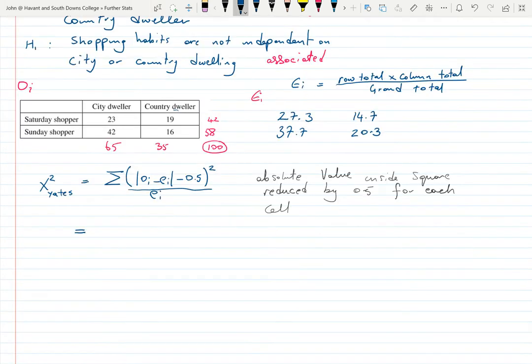Now this is where the Yates thing comes in. I've written the formula in there. It looks complicated but really isn't - we're just reducing the absolute value inside the square by 0.5. It gets even better because of the two by two - any difference here will be compensated by the difference here. If you've got a positive residual here you'll have a negative here, and they'll have to cancel each other out and be the same.